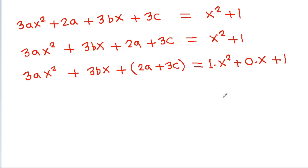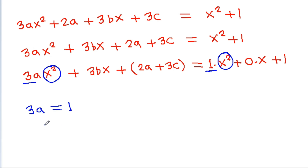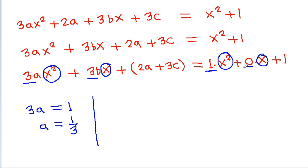And now we can compare the coefficient of x². So 3a will be equal to 1, that means a is equal to 1/3. And we can compare the coefficient of x. So 3b will be equal to 0, that means b is equal to 0.